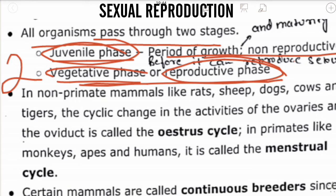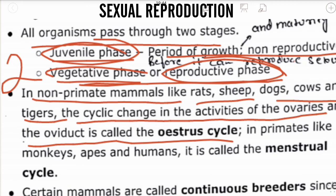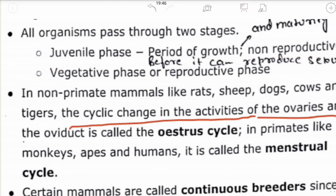In non-primate mammals like rats, sheep, dogs, cows, and tigers, the cyclic changes in the activities of the ovaries and oviduct are called the oestrus cycle. In primates like monkeys, apes, and humans, the corresponding cycle is called the menstrual cycle. These are the two important cycles taking place in organisms.